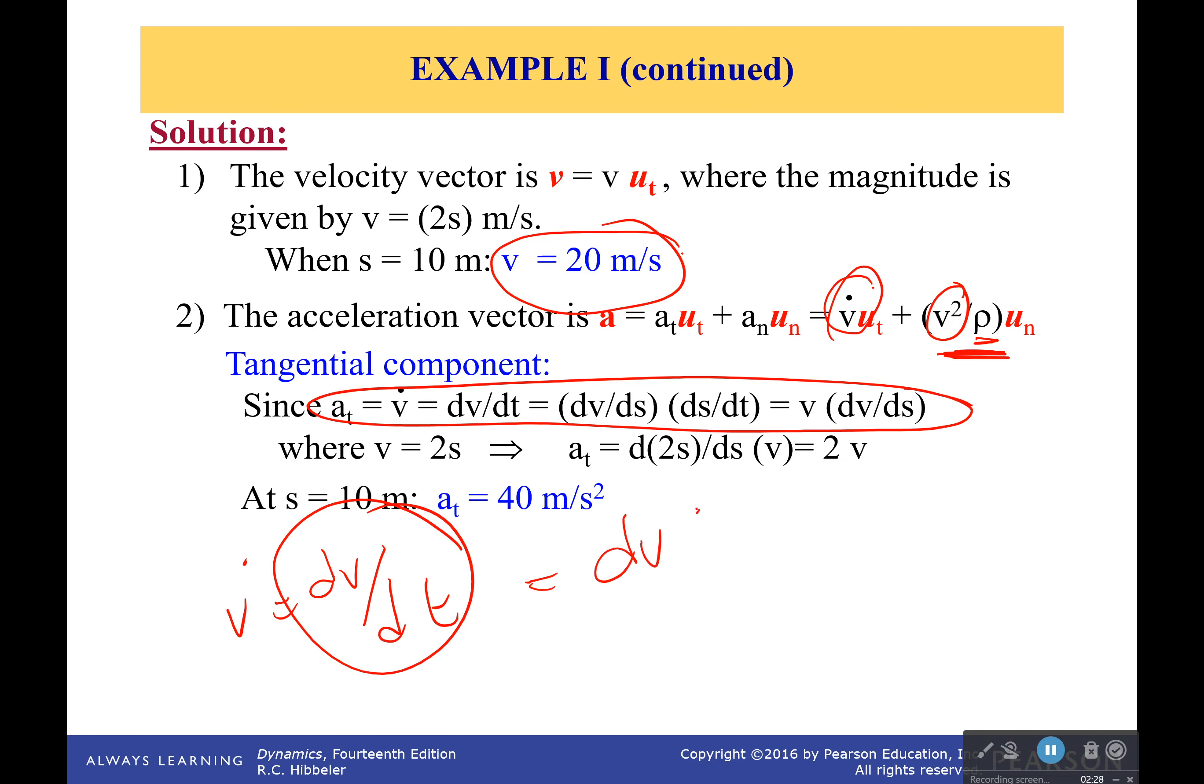So what we know is that this would be the same as dv/ds, so how the velocity changes with position, which we do know, times ds/dt, how the path changes with time, which we know. And so we can then solve this. We can solve it for any given location. So we plug in s equals 10 meters into our equation, we get that the tangential component of acceleration is equal to 40 meters per second squared.